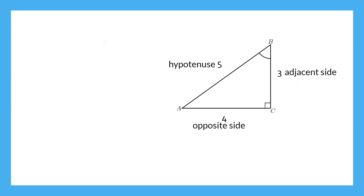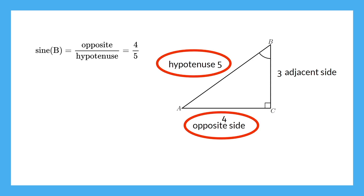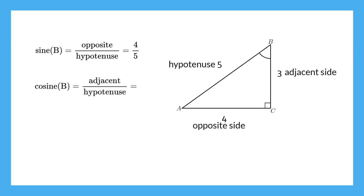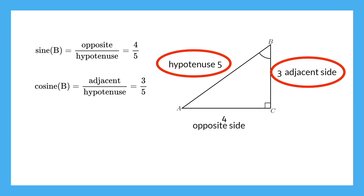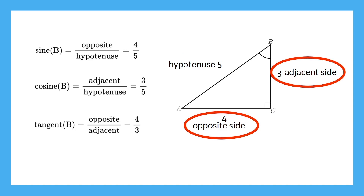Let's try to do the exact same thing, but this time let's use angle B. Notice that the opposite and adjacent sides have switched places. The adjacent side touches angle B; the opposite side does not. Our goal is once again to find the sine, cosine, and tangent of angle B. Why don't you pause the video now and try this one on your own? Let's check our answers. The sine of an angle is the opposite side over the hypotenuse. For angle B, the opposite side is 4 and the hypotenuse is 5. Next, let's check the cosine ratio. Cosine is adjacent over hypotenuse, so for angle B, we have an adjacent side of 3 and hypotenuse of 5. The tangent is the ratio of the opposite side over the adjacent side. The opposite side to angle B is 4, and the adjacent side is 3.